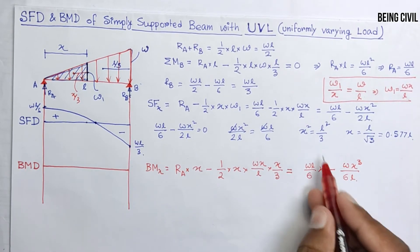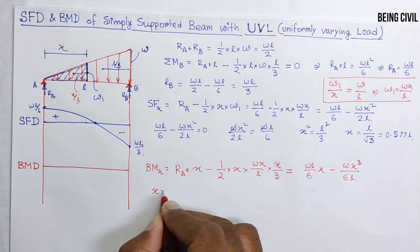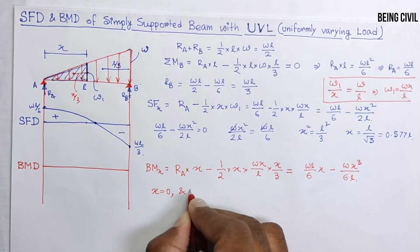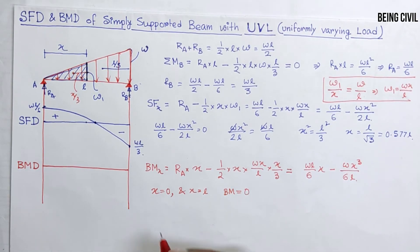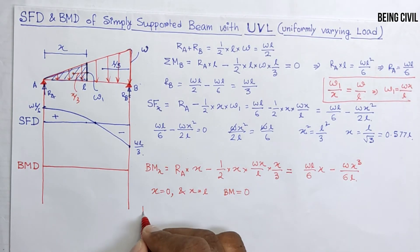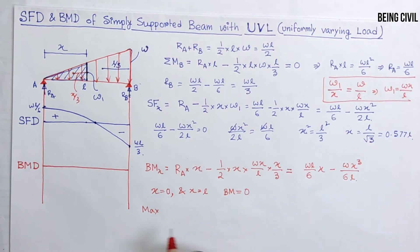This is the bending moment equation. At X equals 0 and X equals L, bending moment is 0. To get the maximum bending moment, it will be at a distance of X equals L by root 3.